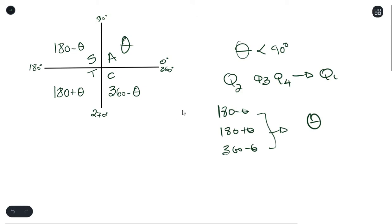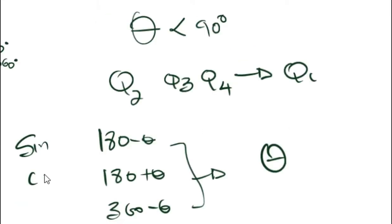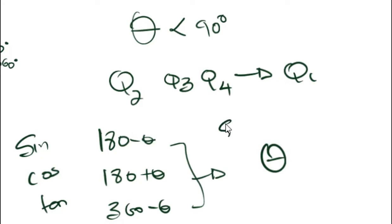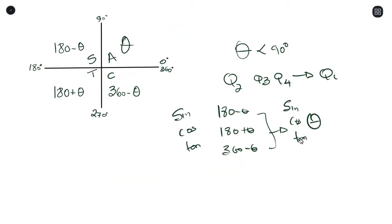It doesn't matter if you're working with sine, cos, or tan — we want to change each of those trig ratios into sine, cos, or tan of theta. To change from the other quadrants into the first, we understand that the trig ratio itself wouldn't change. However, the sign of the trig ratio could.